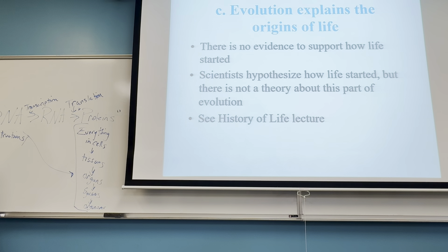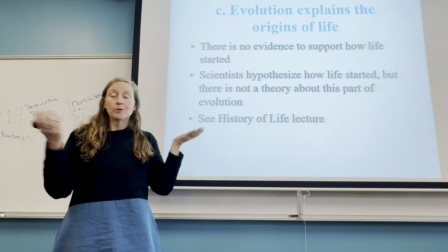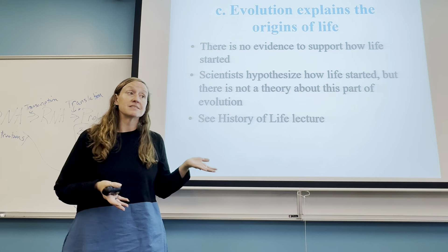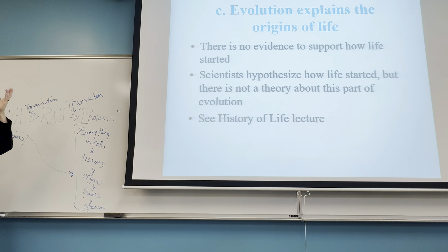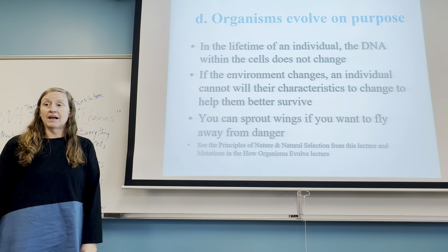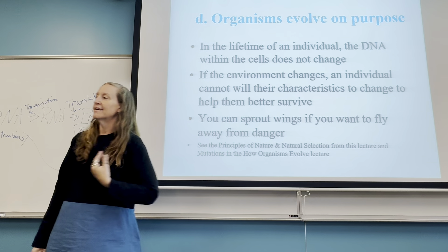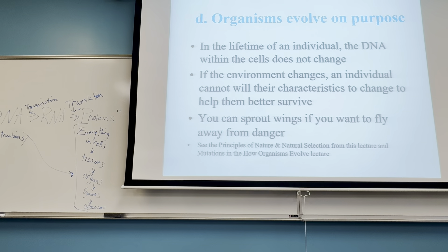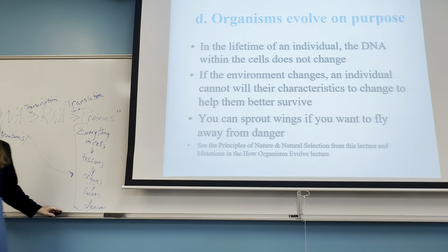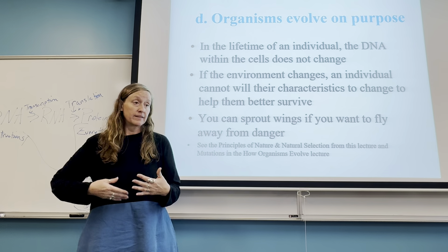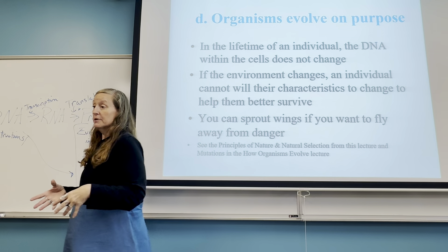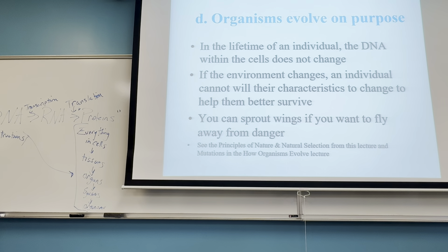Evolution does not explain the origins of life — nobody has evidence to show how life started. We have hypotheses for that, but no proof. We will talk about the history of life and evidence that supports how life may have started. Also, organisms do not evolve on purpose — you can't just sprout gills or wings if you want to. Evolution happens by chance; the environment and climate change constantly, and hopefully a population has traits that are positive given those changes. If not, the population can dwindle or go extinct.